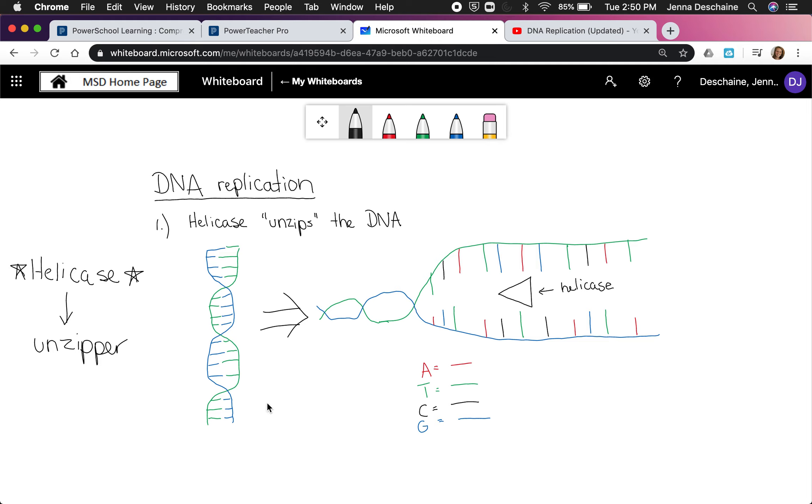What helicase actually does is, I'm going to draw helicase like a little triangle like this. It actually goes through the DNA strand and kind of unzips it. Just think of it as like a zipper that you can zip down to unzip something. Initially DNA is all tied up like this, and remember those nitrogen bases are bonded together, but helicase actually breaks those bonds.